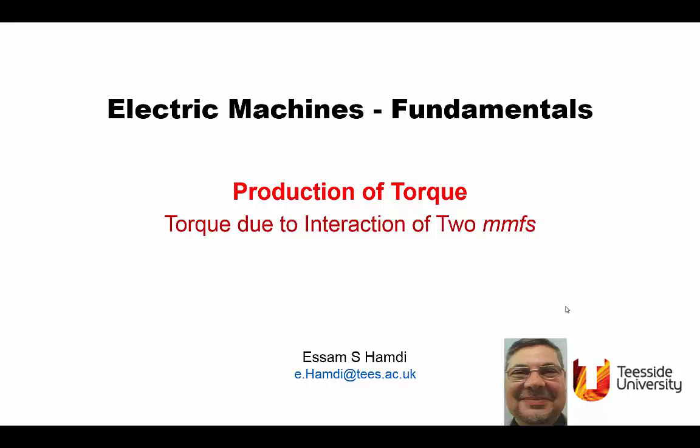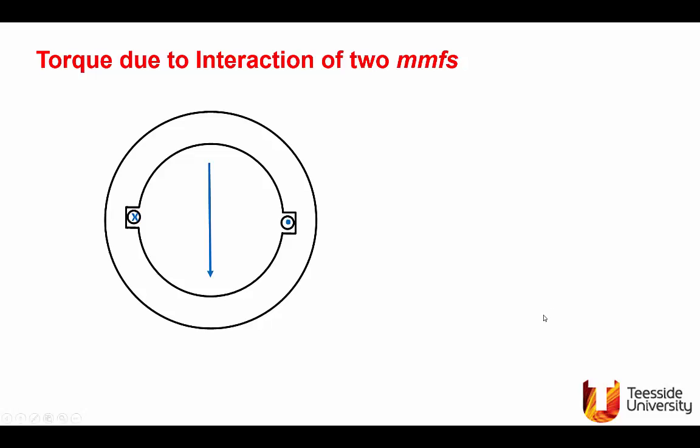Hopefully by the end of this presentation, which is the fifth in the series, you will be able to see that the mechanism of production of torque in DC, synchronous, and induction machines is not really different. So we start, and as always, we start with something simple.